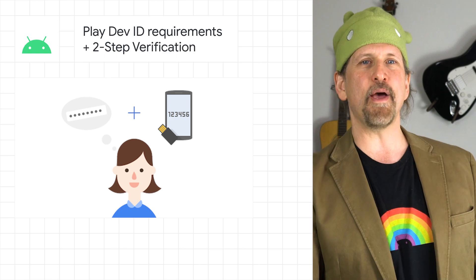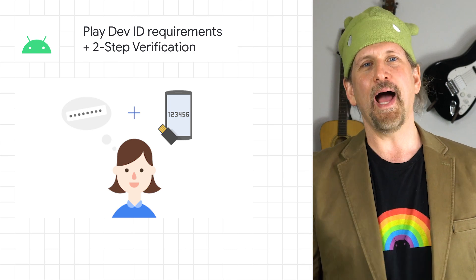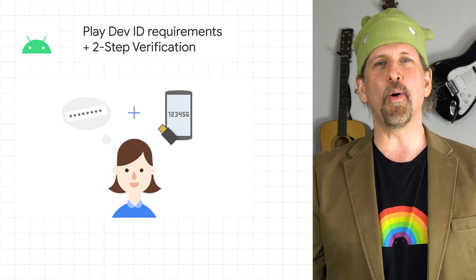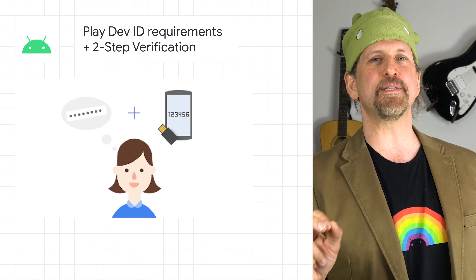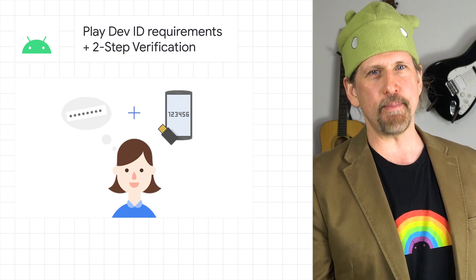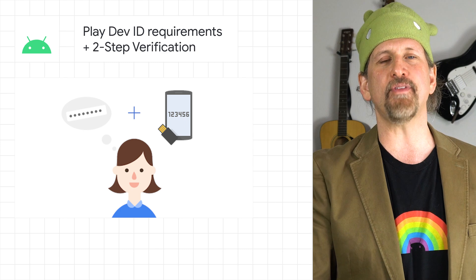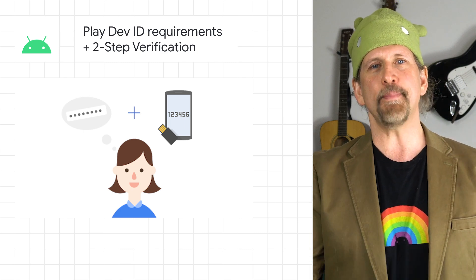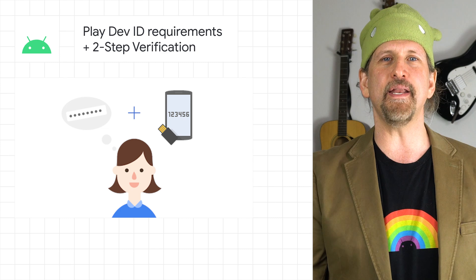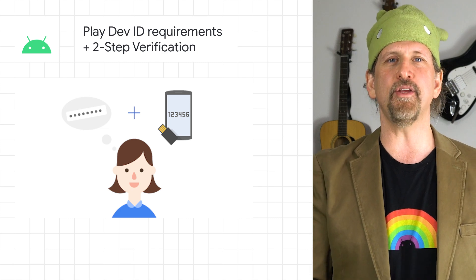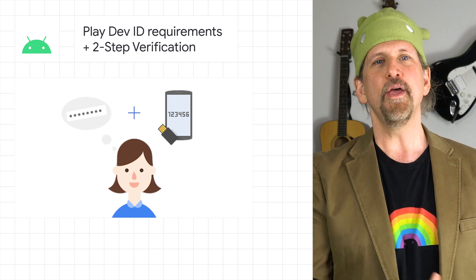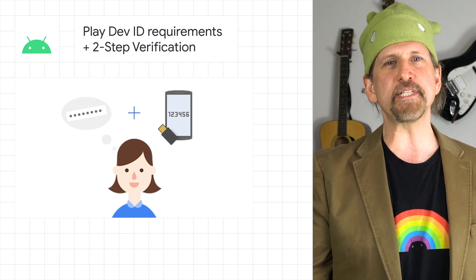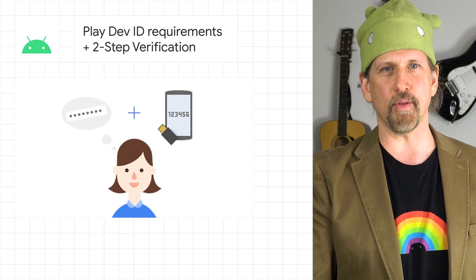We're introducing two new security measures to Google Play: additional identification requirements and two-step verification. With this update, owners of developer accounts will also be asked to provide their account type, a contact name, physical address, and verification of email and phone number. We're also mandating that users of Google Play Console sign in using Google's two-step verification. You can find the timeline for these changes on the post, along with some best practices to keep your account in good health.